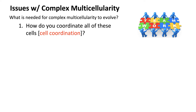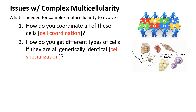Number one: for complex multicellularity to evolve and to work, you need organisms to figure out ways to coordinate all of the cells so that they work together. Think of this diagram of teamwork, where all the puzzle pieces fit together to make a coherent word. Each puzzle piece represents a cell, tissue, or organ system. The cells have to work together to get an organism to function, so you need to coordinate all those different cells.